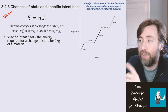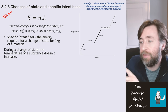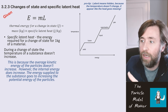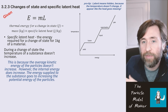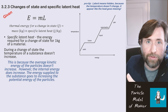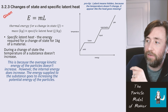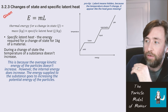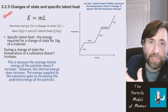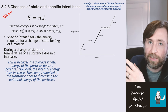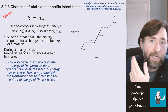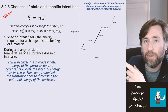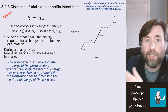Once it's a gas, its temperature can increase again. The definition of specific latent heat is the energy required for a change of state for one kilogram of material, and importantly during a change of state the temperature doesn't increase. This is because the average kinetic energy of the particles doesn't increase during that change of state. What does increase is the internal energy, because the potential energy of the particles is increasing. So while temperature is increasing we have an increase in kinetic energy; at the horizontal flat line where temperature stays the same, we're increasing potential energy.